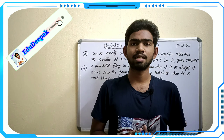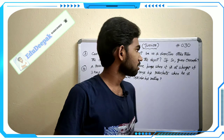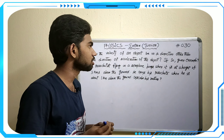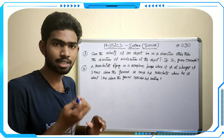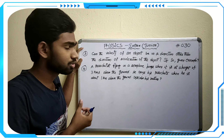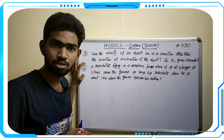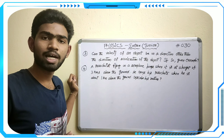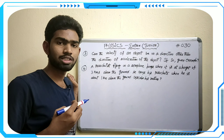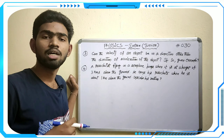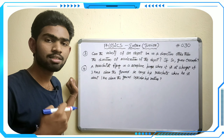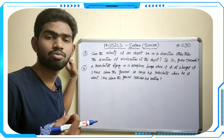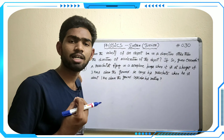Hello students, welcome to my channel Edu Deepak. This is the 30th video, hashtag 030. This video contains the third and fourth questions of the Motion in a Straight Line chapter. Previously we completed Units and Measurements and Physical World chapters, along with some related problems.